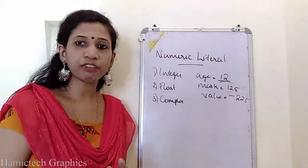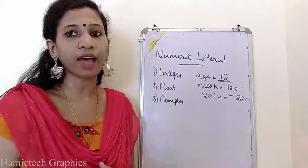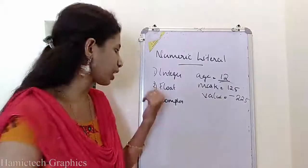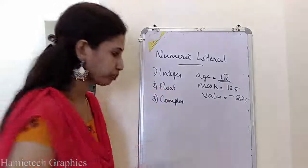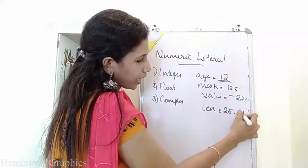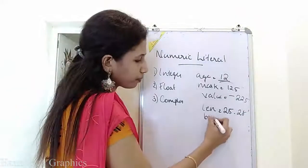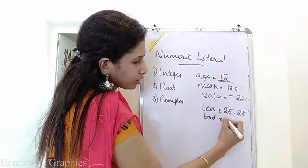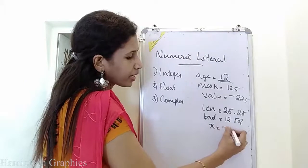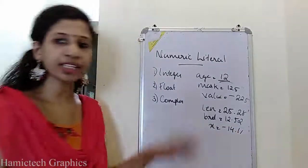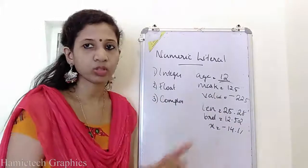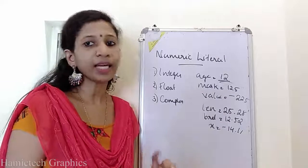The next one is float. Float means decimal values can also be used. Either positive or negative decimal numbers are used in the floating point. For example: length = 25.28, breadth = 12.52, eggs = -14.11. All these are floating point numbers — they will have an integer part and a decimal part.